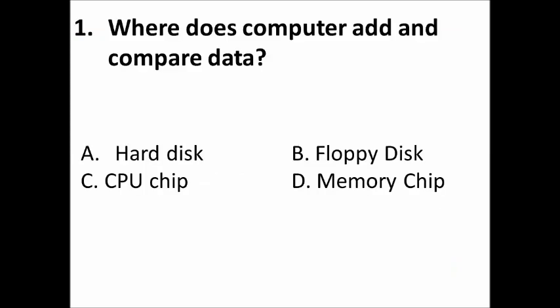Our first question is: Where does computer add and compare data? Option A: Hard disk, B: Floppy disk, C: CPU chip, and D: Memory chip. Guess your answer. Yes, the correct answer is CPU chip.